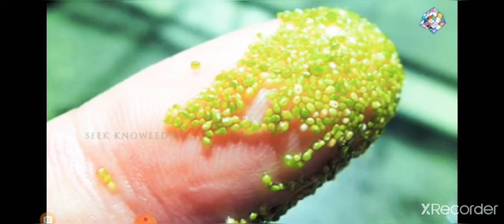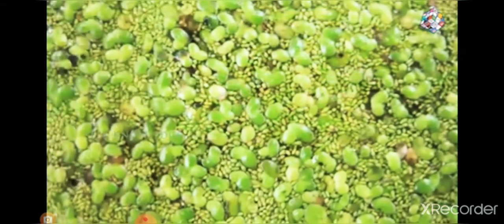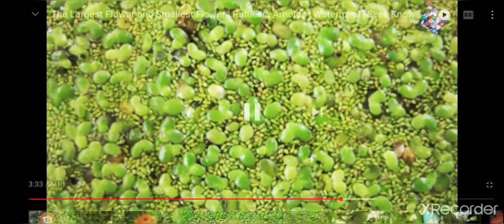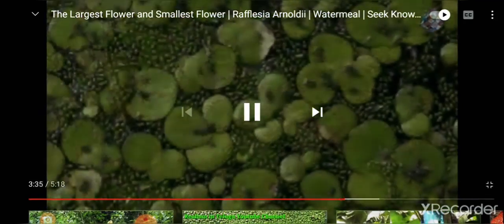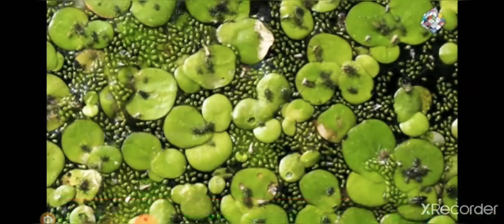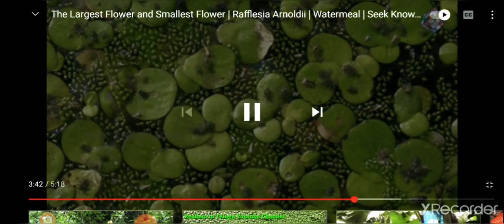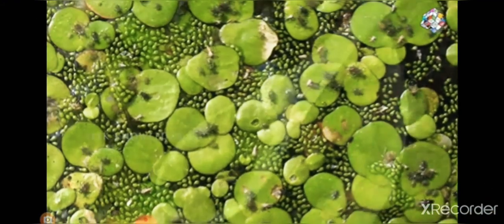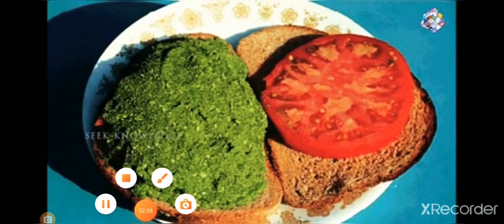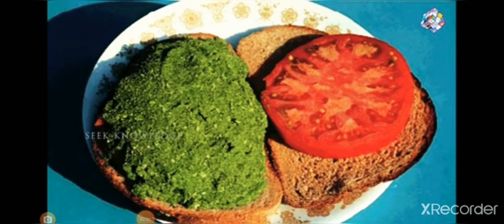Wolfia species are free-floating, thalloid, green or yellow-green and without roots. The flower is produced in a depression on the top surface of the plant body. It has one stamen and one pistil. Individuals often float together in pairs or form floating mats with related plants such as Lemna and Spirodela species. Most species have a very wide distribution across several continents. Wolfia species are composed of about 40 percent protein on a dry matter basis, about the same as soybean, making them a potential high-protein human food source.